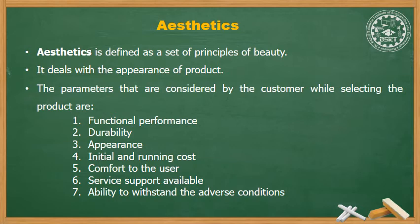The factors considered while selecting products based on aesthetics are as follows. First is functional performance — the product must perform as expected. Second is durability — how long the product performs effectively. For example, a car's appearance and performance are both considered when a customer selects it.